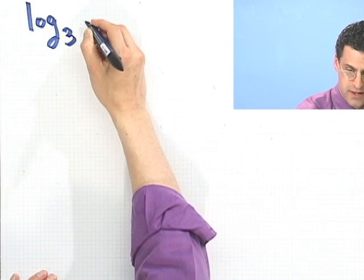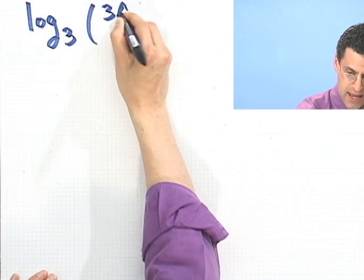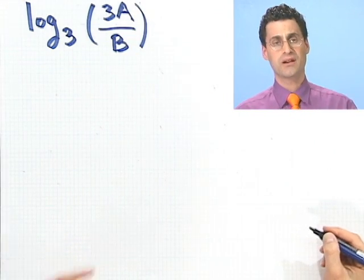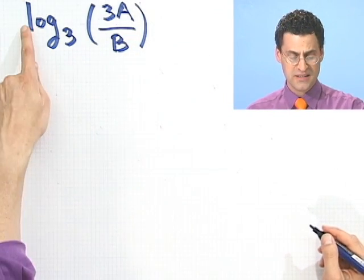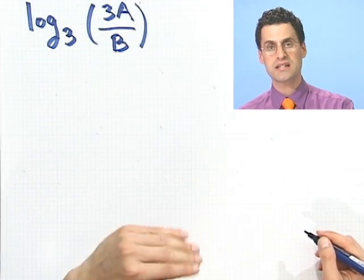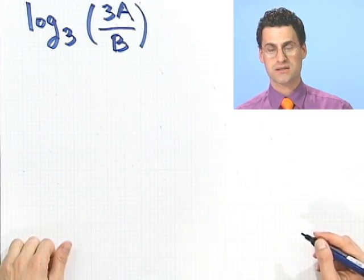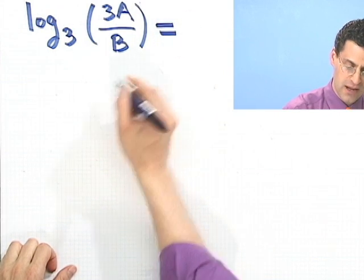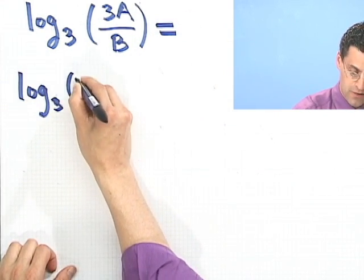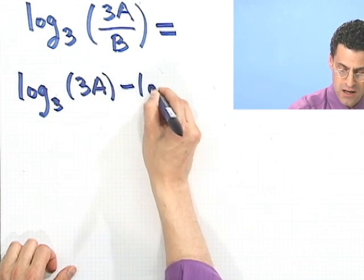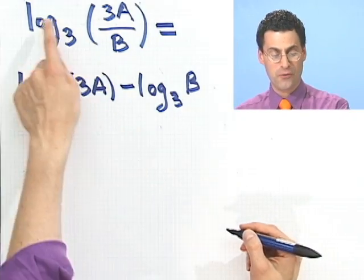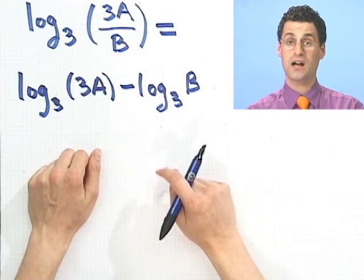Log base 3 of 3a divided by b. Okay, well here's how I think about it. I see this is a log of a quotient. The log of a quotient is the differences of the logs. So using that formula, I can write this as log base 3 of 3a minus log base 3 of b. These two things are equal by that formula.